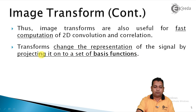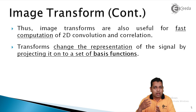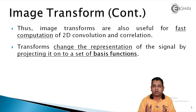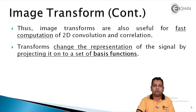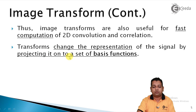Transforms change the representation of the signal by projecting it onto a set of basis functions. The term 'basis functions' is very important. As in physics, a material has the basic entity of atoms — copper has different atoms, silicon has different atoms. These atoms form molecules, and molecules form the material. Similarly, the basis is the basic foundation with which we can have the storage, representation, and reproduction of particular information. These basis functions are very important in the mathematical formulation of transforms — the representation is done by projecting the information onto this set of basis functions.